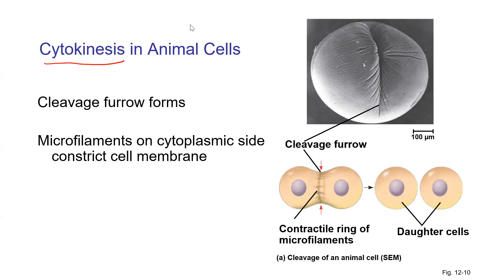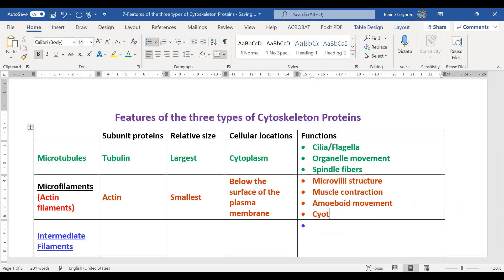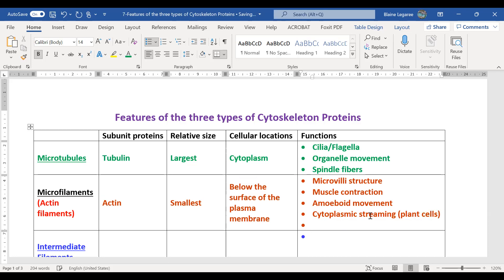Adding to the board notes: cytoplasmic streaming occurs in plant cells; cleavage furrow formation occurs in animal cells. Actin is very versatile — microvilli, amoeboid movement, cytoplasmic streaming, cleavage furrow — different cell types use actin in different ways, but it usually involves structures near the cellular membrane.